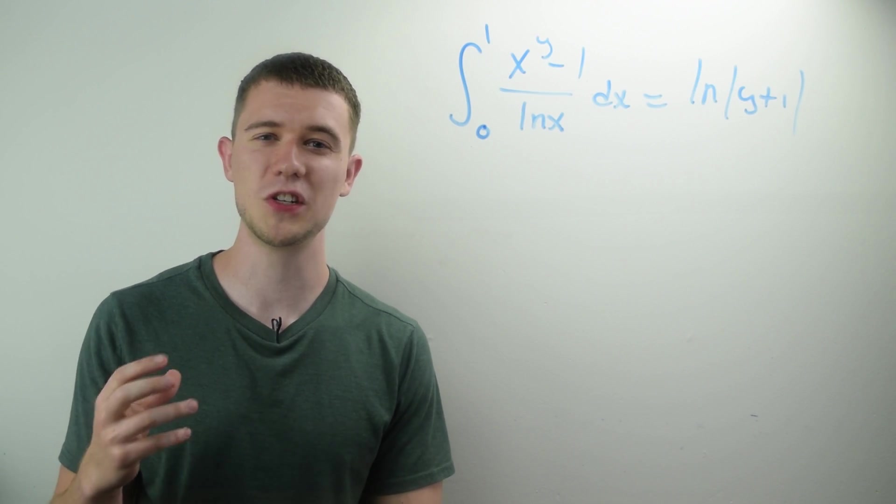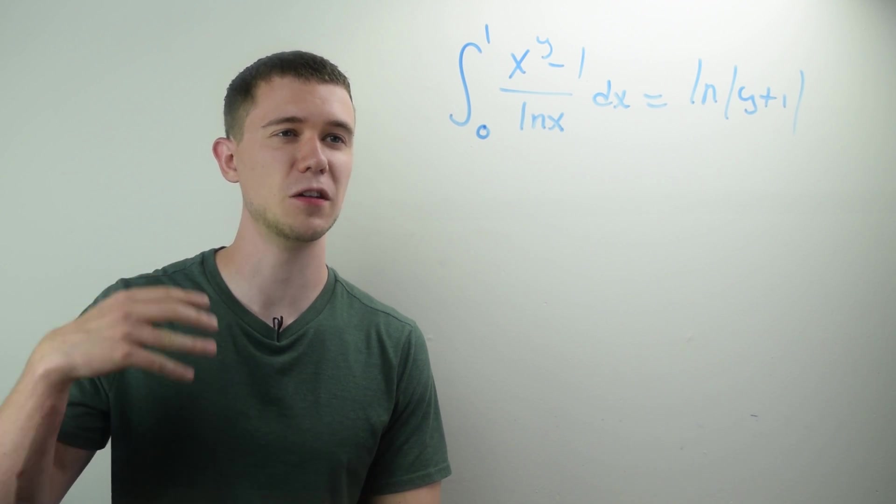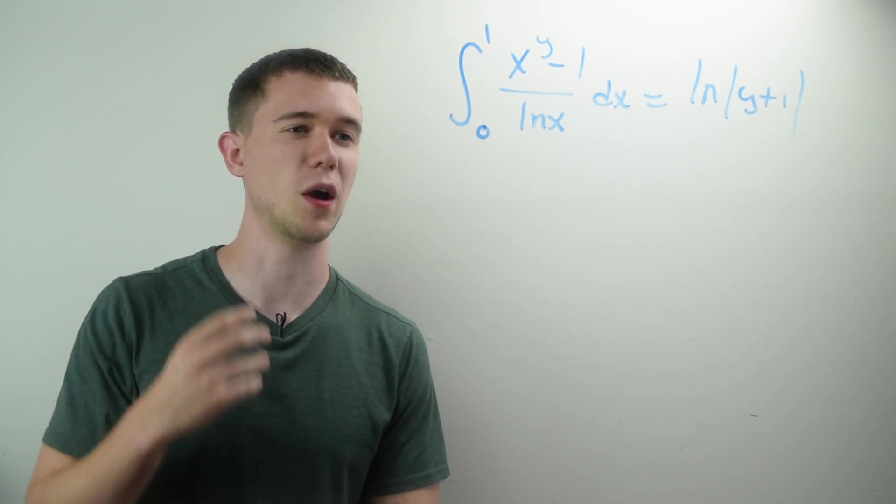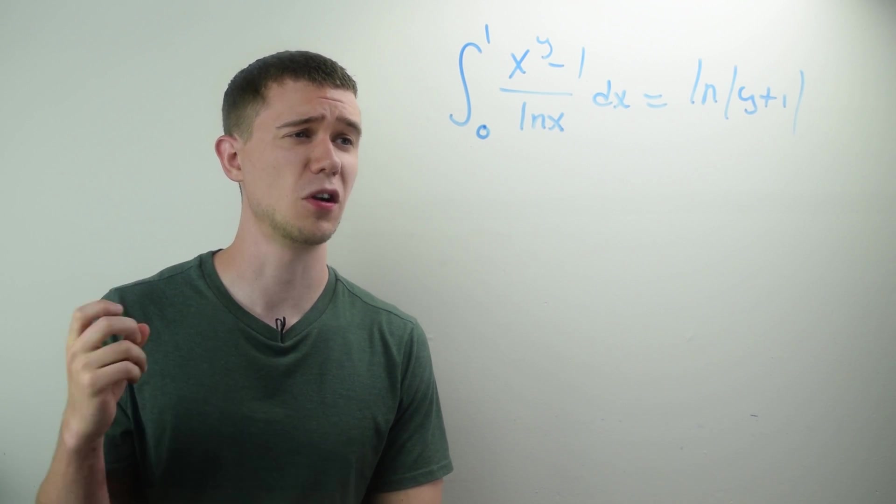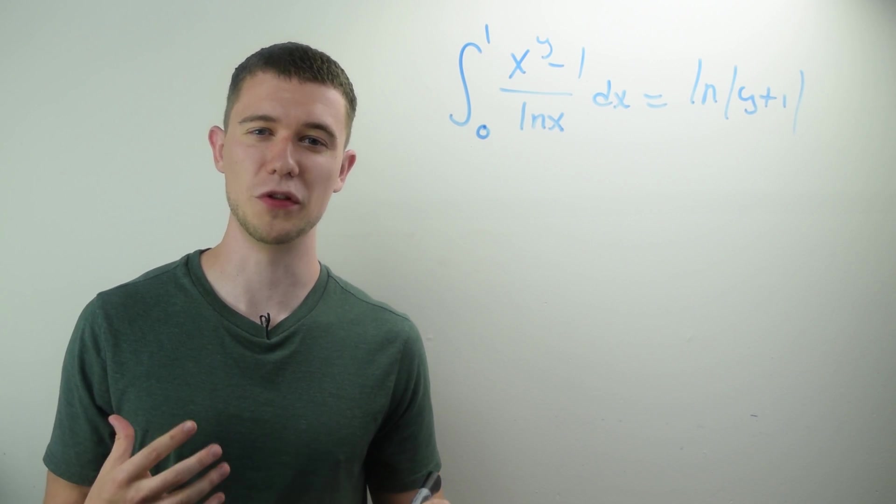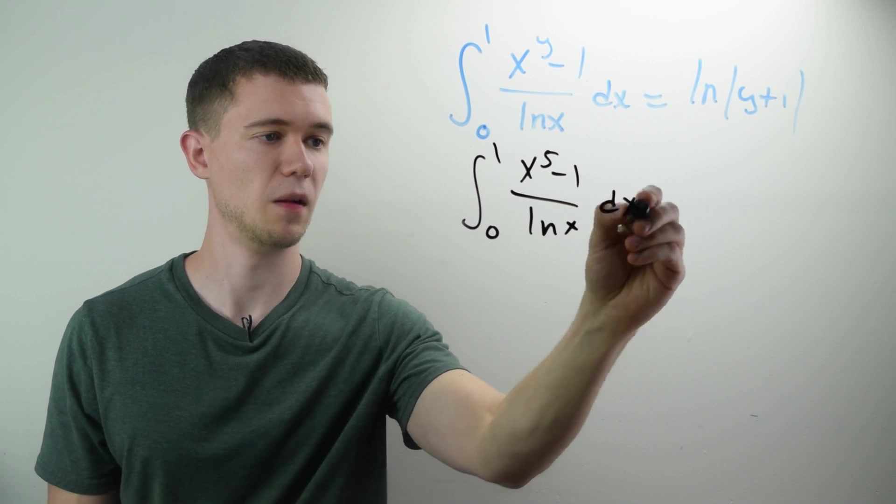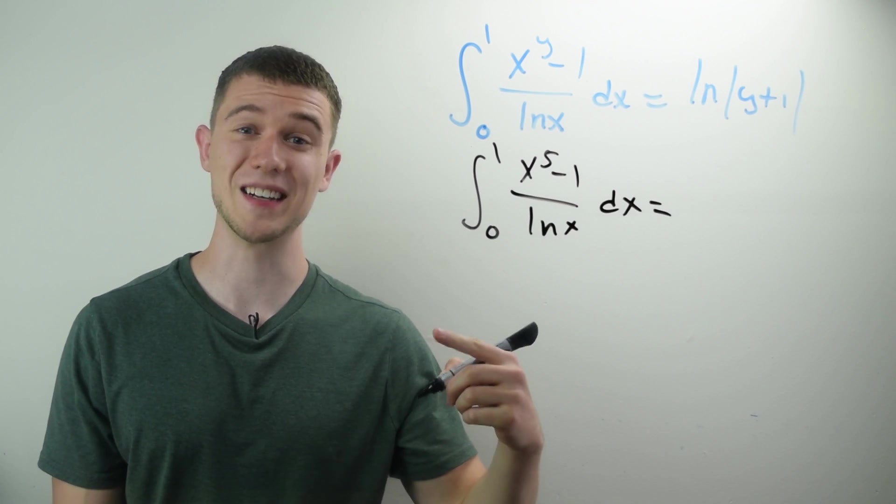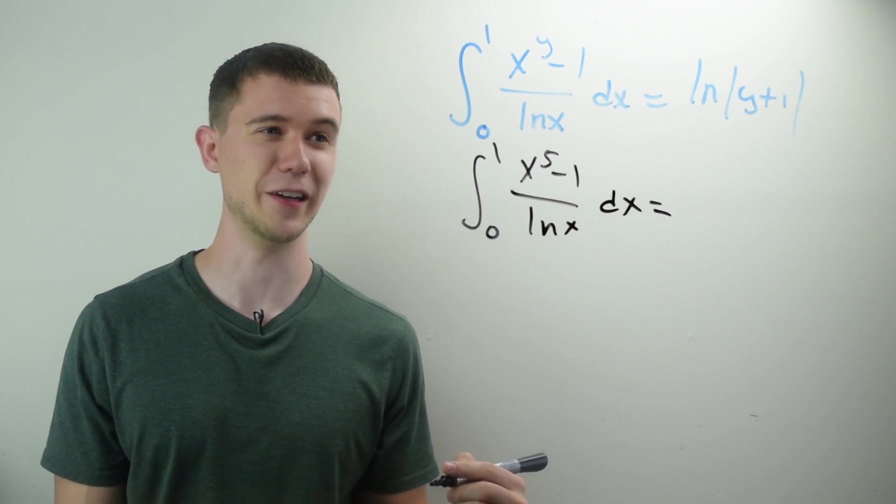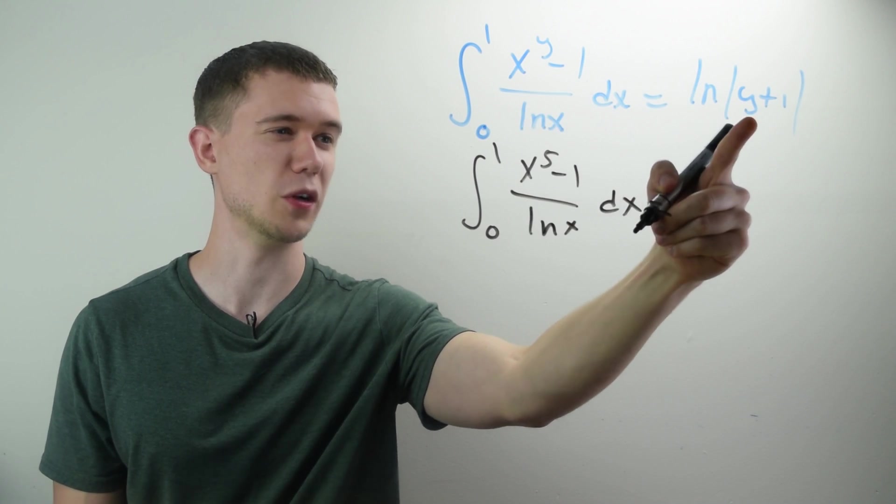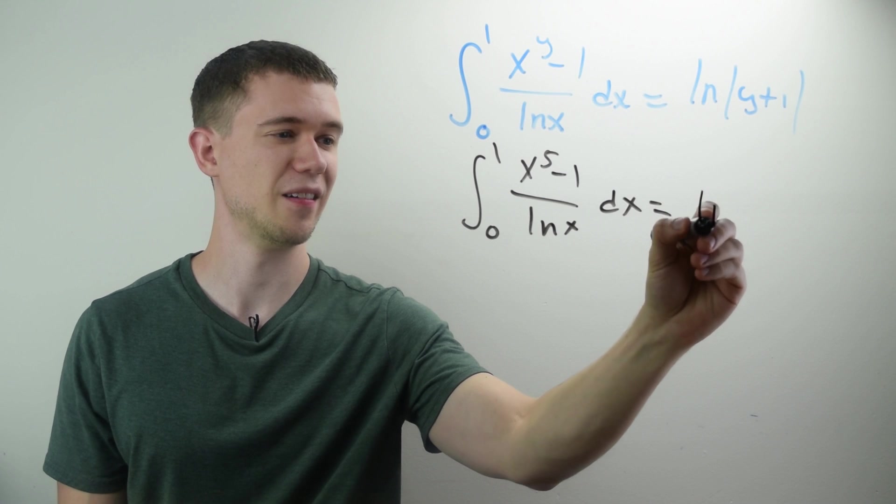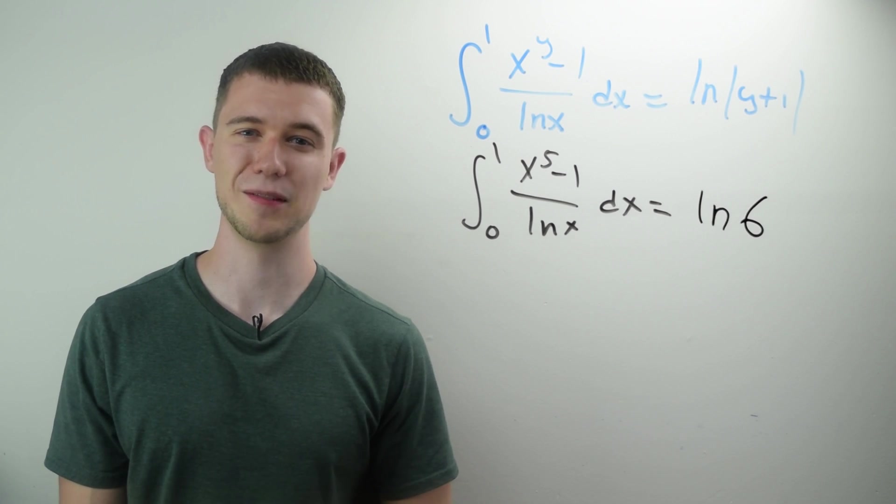Through this differentiation under the integral sign, I found that this definite integral from 0 to 1 of x to the y minus 1 over natural log x dx is equal to the natural log of y plus 1. Hey, I was concerned with this problem, which is the integral from 0 to 1 of x to the 5th minus 1 over ln x. Well, that means I just plugged in 5 for y here. I'll just plug in 5 for y here. Log of 6 will be the answer.